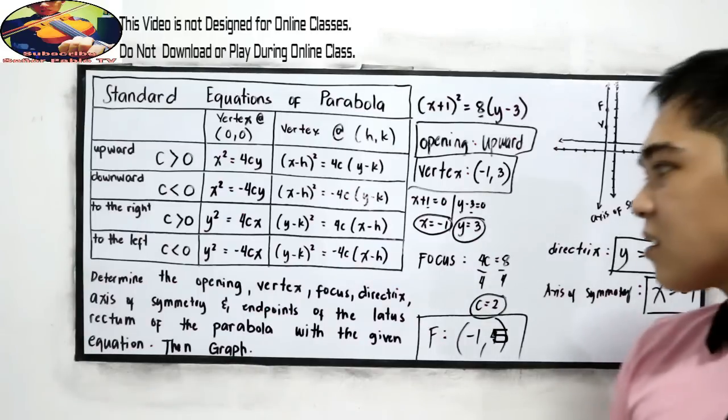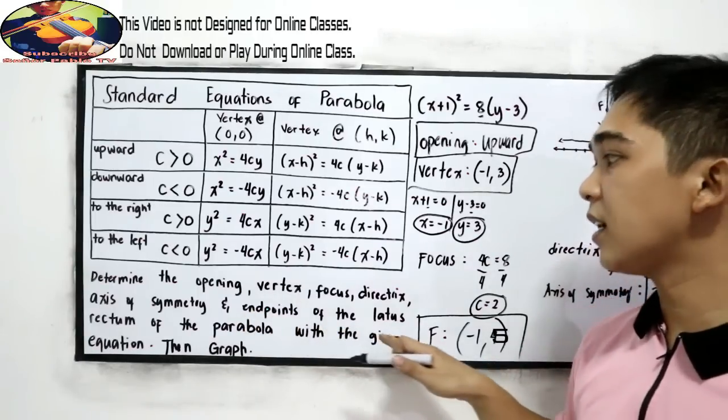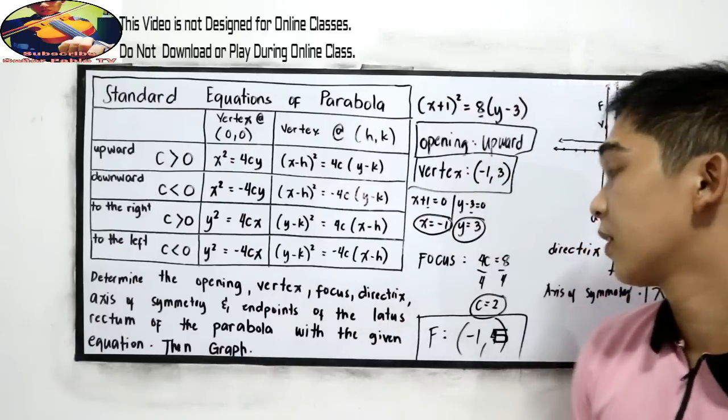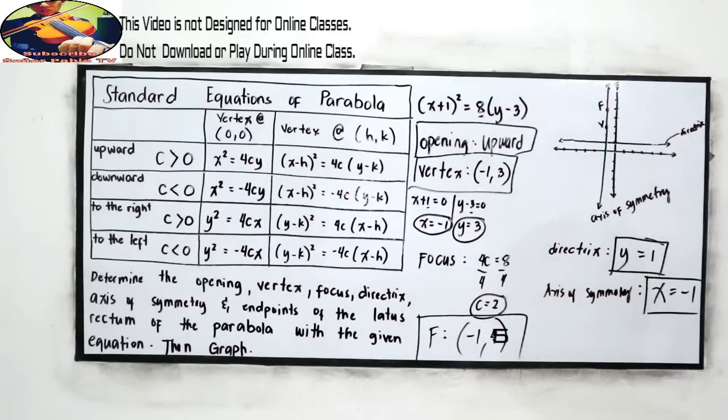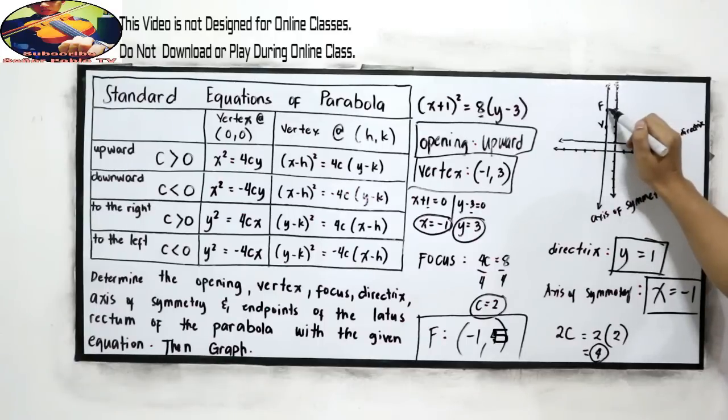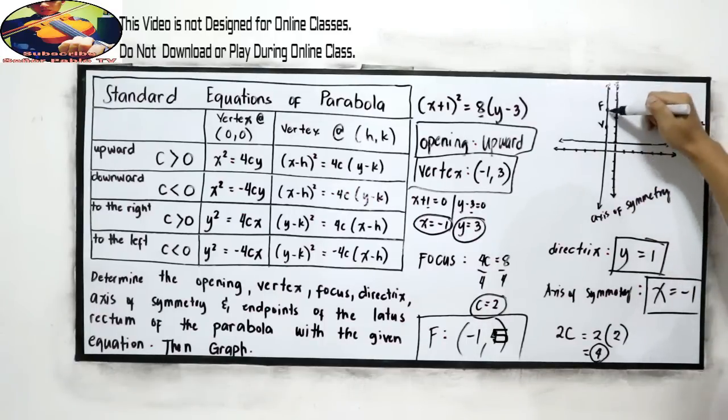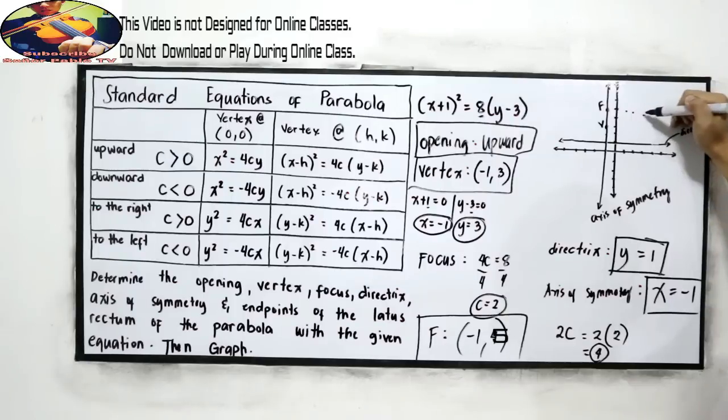And last, the endpoints of the latus rectum. We have the formula 2c. And our c is 2. So substitute. 2 times 2. So this is 4. So from the focus, 4 units to the right. 1, 2, 3, 4.